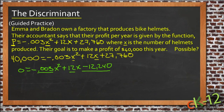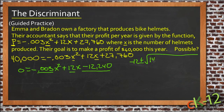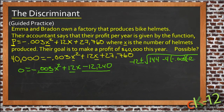We have negative b, or negative 12, plus or minus the square root of 12 squared — so 144 — minus 4 times a, which is negative 0.003, times c, which is negative 12,240, all over 2a, so 2 times negative 0.003.